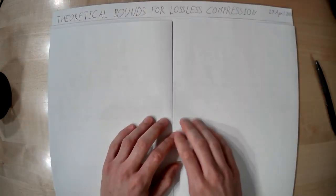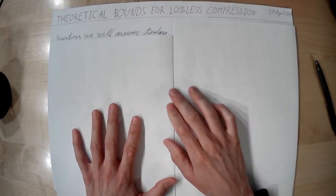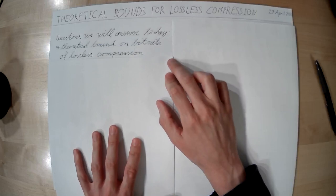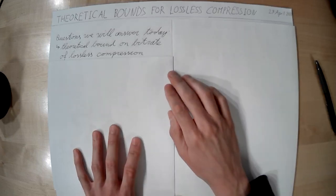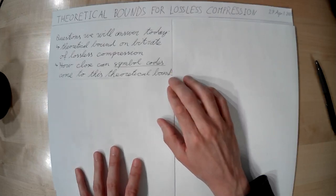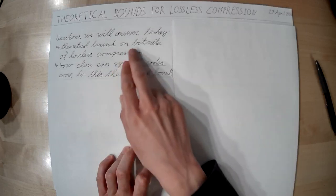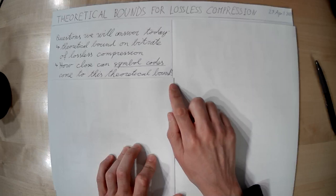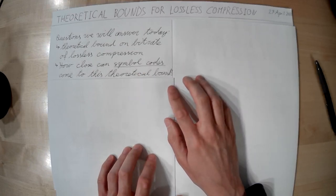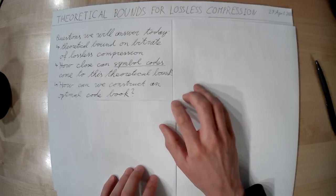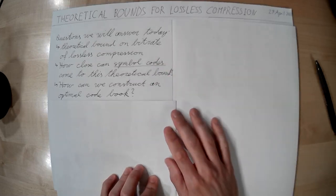With that, let's now get to the topic of today's lecture: theoretical bounds for lossless compression. Today we're going to answer a number of questions. First, what is the theoretical lower bound on the bitrate of lossless compression? Second, is this lower bound just an academic result, or can we actually come close to it with a symbol code? Third, if we can prove such a symbol code exists, can we actually construct it?